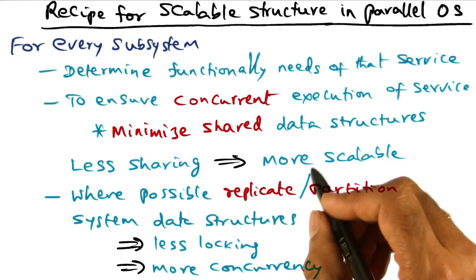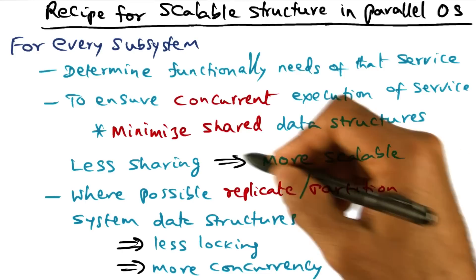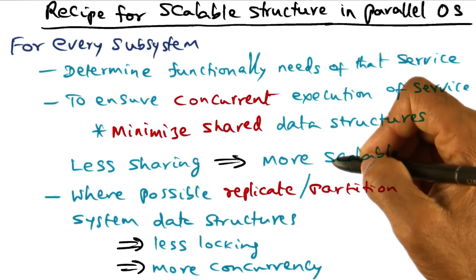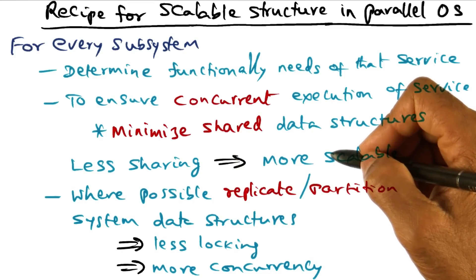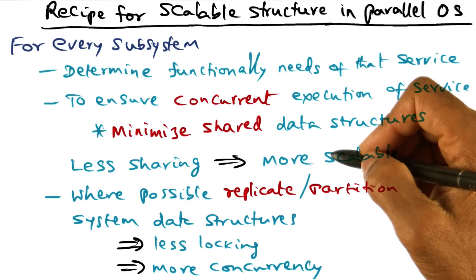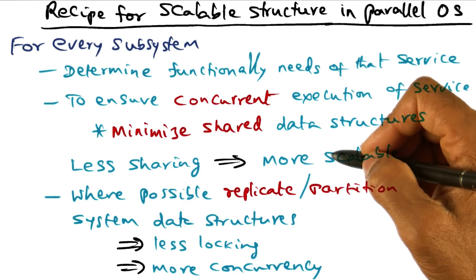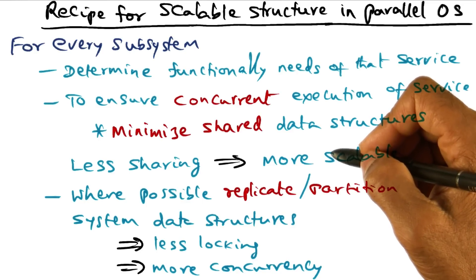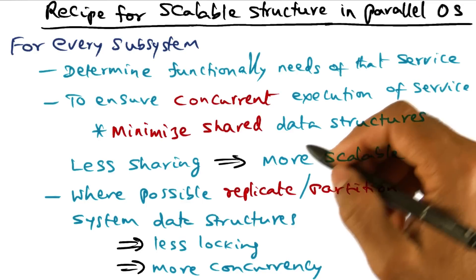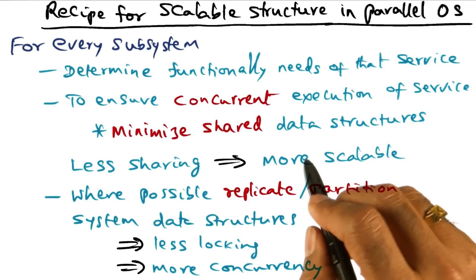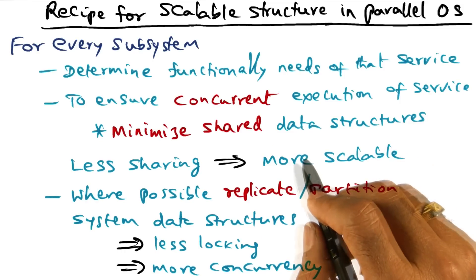Now the problem is, it is easy to say avoid sharing data structures, but it is hard to practice. Because it is not always very clear how, in designing the subsystem, we can limit the amount of sharing of shared data structures.